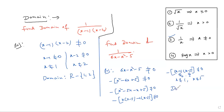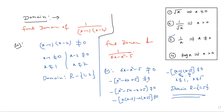Then what is the domain? Domain is R minus {1, 5}. This is very simple and important. Definitely you will get one or two marks questions like this in the annual exam.